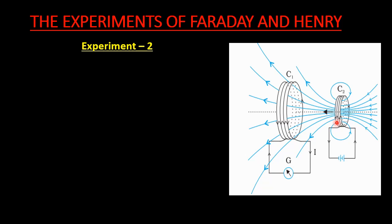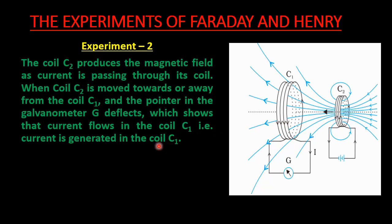The summary of this experiment is: when coil C2 produces a magnetic field as current passes through it, and coil C2 is moved towards or away from coil C1, the pointer in the galvanometer deflects, which shows that current is generated in coil C1.